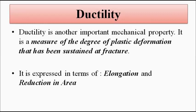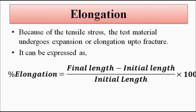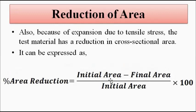Ductility is the degree of plastic deformation that a material undergoes at the point of fracture. The two important parameters used to express ductility are elongation and reduction in area. Elongation is calculated as (final length minus initial length) divided by initial length, times 100. Reduction in area is (initial area minus final area) divided by initial area, times 100 percent.